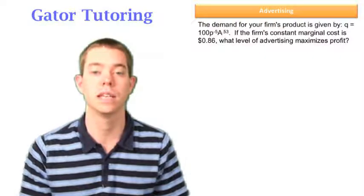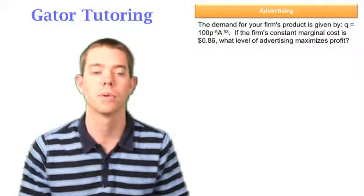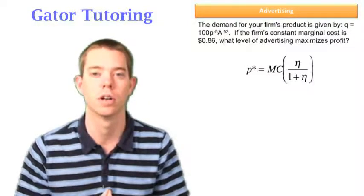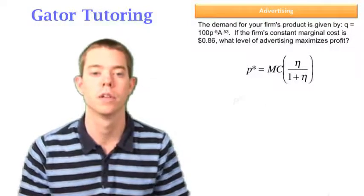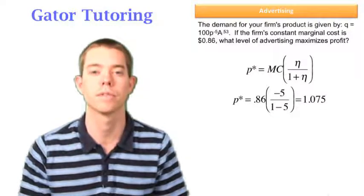We know that we're given the elasticity of demand because it's the exponent on the price variable, and we're given our constant marginal cost so we know how we can find P-star with those two components. So we plug everything in and we find that our optimal price is 1.075.